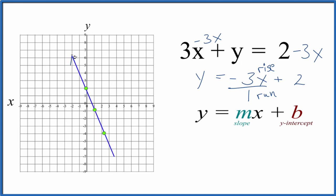Let's put a line through that. We'll put arrows to show that this goes to infinity, and that's the graph for 3x plus y equals 2. You could also use a table of values to figure this out and get the same graph. So our slope is negative 3, or negative 3 over 1, and the y-intercept is 2.